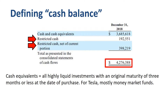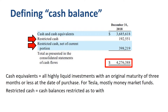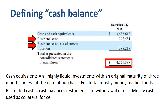The remaining $600 million is restricted cash. Restricted cash is cash balances restricted as to withdrawal or use, mostly cash used as collateral for certain business transactions. For reporting purposes, there is a split between current and non-current restricted cash.